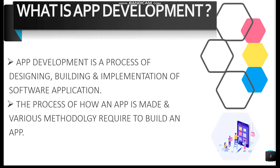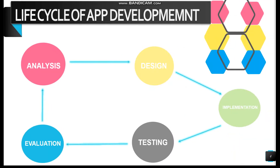It is also defined as the process of how an application is made and what various methodologies are required to build an app. Many people think that application development means creation of source code, but creation of source code is just a part of application development. To develop an app, it follows some steps known as the life cycle of application development.